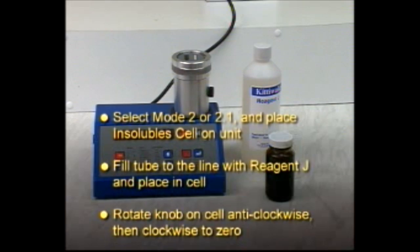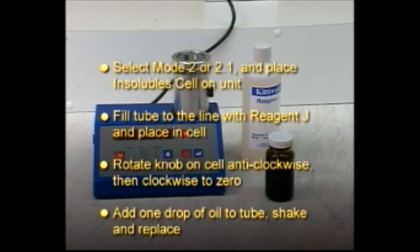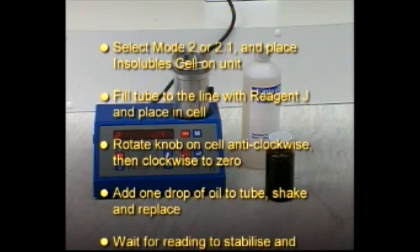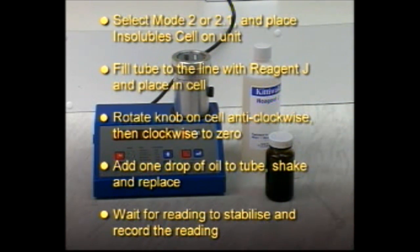Rotate the knob on the cell anticlockwise, then clockwise to zero. Add one drop of oil to the tube, shake and replace. Wait for the reading to stabilize. Record the reading.